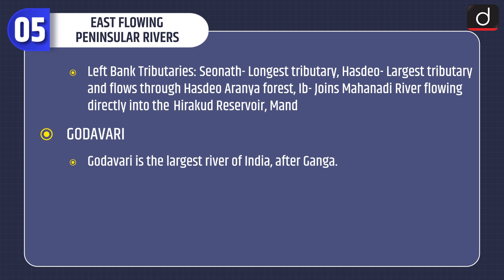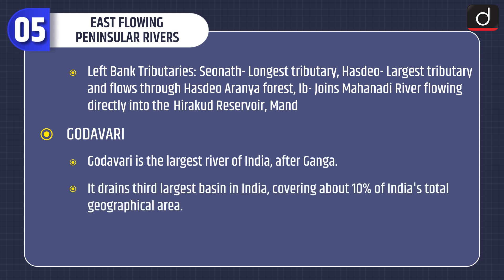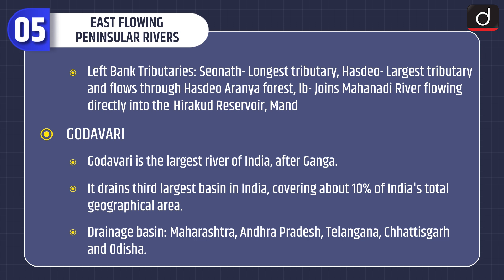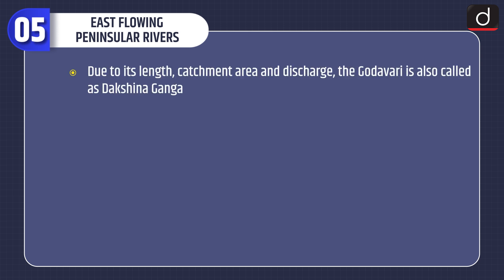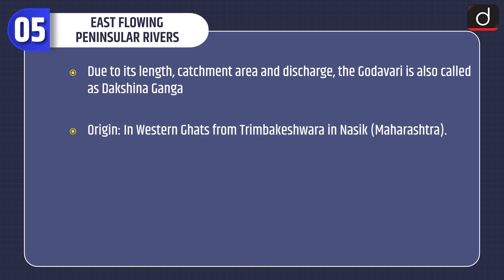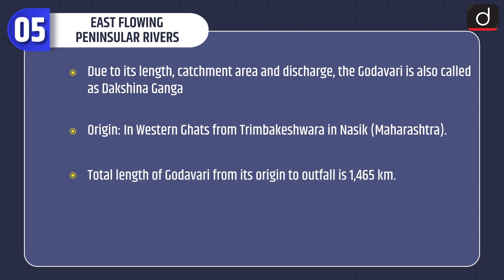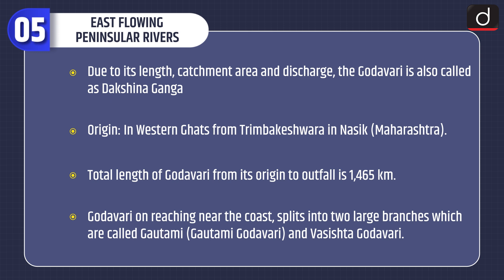Godavari is the largest river of India after the Ganga. It drains the third largest basin in India, covering about 10% of India's total geographical area. Drainage basin: Maharashtra, Andhra Pradesh, Telangana, Chhattisgarh and Odisha. Due to its length, catchment area and discharge, the Godavari is also called Dakshin Ganga. Origin: Western Ghats at Trimbakeshwar in Nasik, Maharashtra. Total length is 1465 km. On reaching near the coast, it splits into two large branches called Gautami Godavari and Vashishta Godavari.